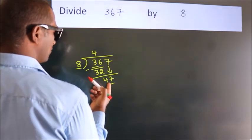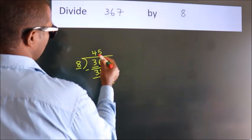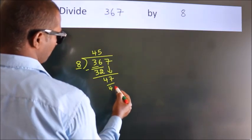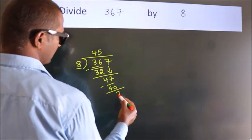A number close to 47 in the 8 table is 8 fives, 40. Now we subtract; we get 7.